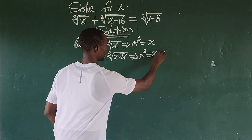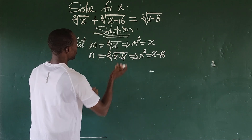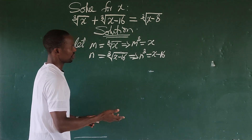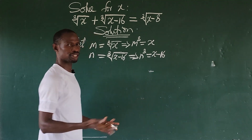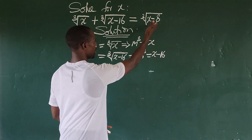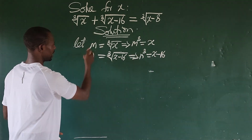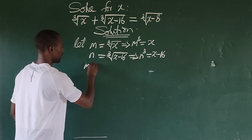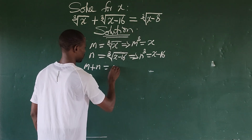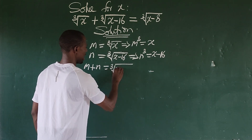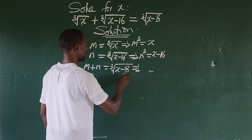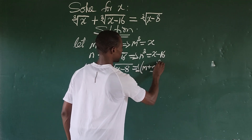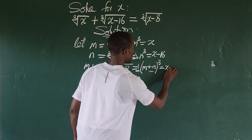Now, if we add m³ and n³ together, that gives us 2x minus 16, and factoring out 2 gives us x minus 8. So automatically our third substitution will be: m plus n equals the cube root of x minus 8. Taking the cube of both sides gives us (m + n)³ equals x minus 8.